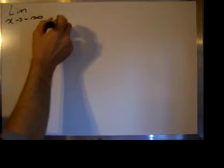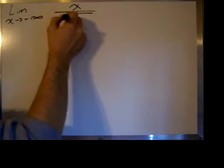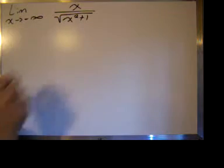Good morning. Today we're going to take a limit as x approaches infinity, negative infinity to be exact, and it's the limit as x approaches negative infinity of the function x over the root of x squared plus one.